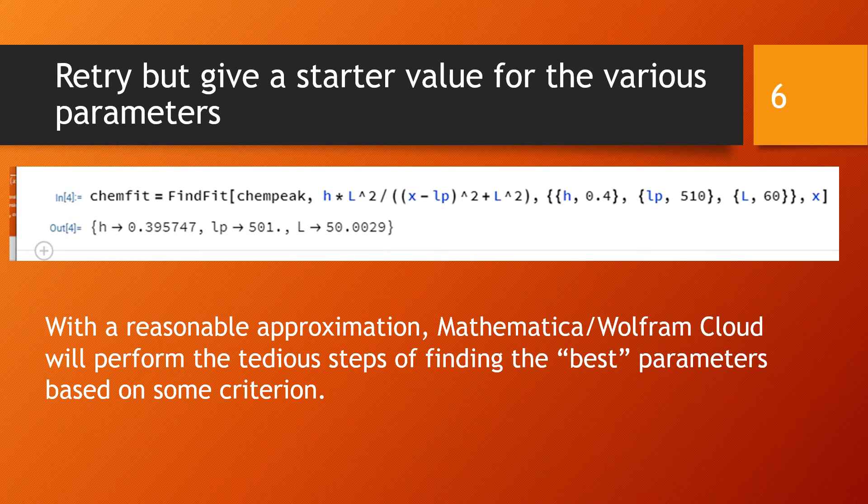In the second version of FindFit, the set of parameters h, lp, and L, each parameter is replaced by a set of the parameter and a starting point for that parameter. So h becomes curly bracket h comma 0.4 close curly bracket, and so on. And then with the decent head start, Mathematica/Wolfram Cloud has no problem going through all the tedious steps to find the best fitting parameters close to the original starting points that you give it.